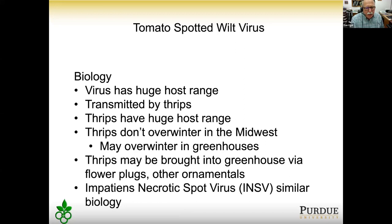Perhaps the most important point: thrips may be brought into greenhouses via flower plugs and other ornamentals. If you grow flower plugs and tomatoes in the same greenhouse, the virus can be transmitted from the flower plugs to your tomatoes. There's also a cousin virus, Impatiens Necrotic Spot Virus (INSV), with similar biology. Tomato spotted wilt virus appears more common, but you may also encounter INSV.